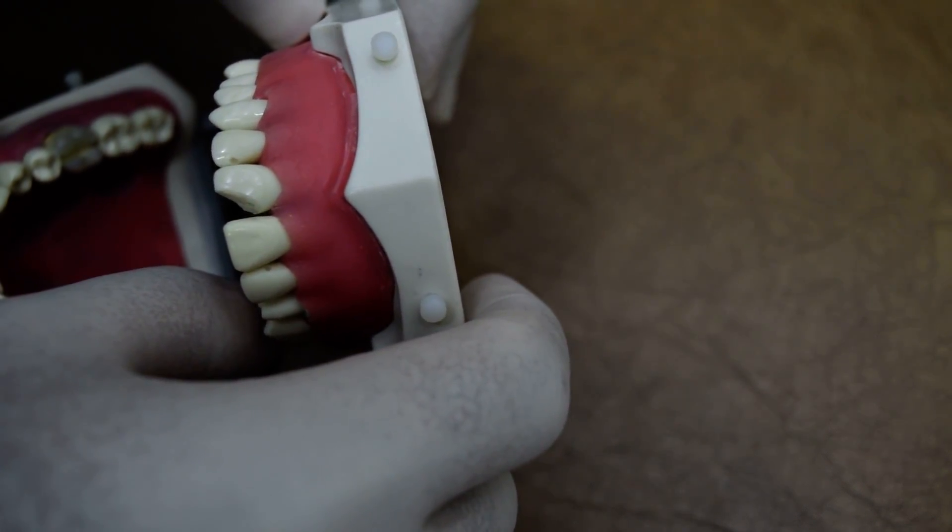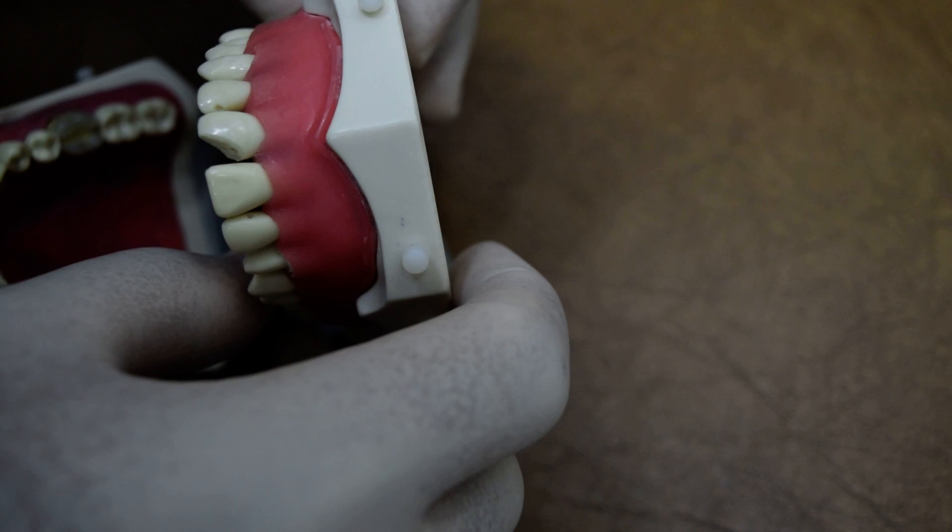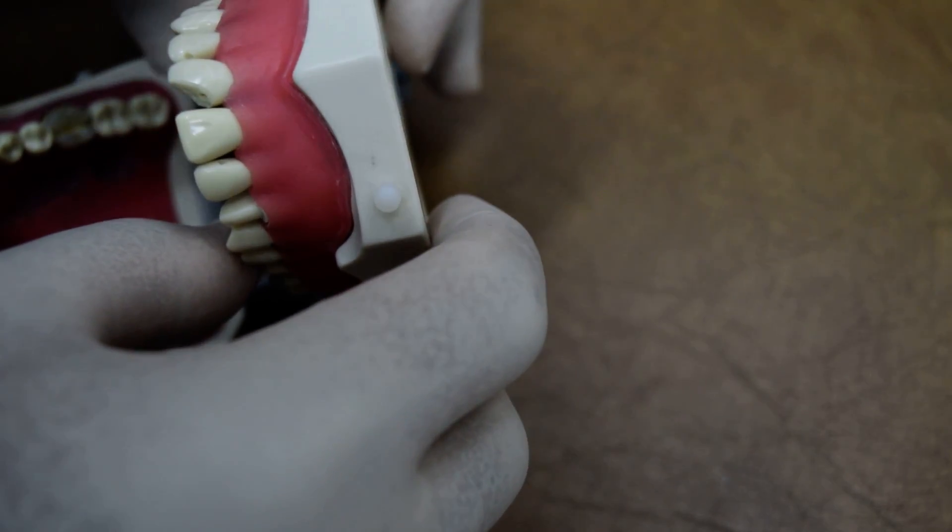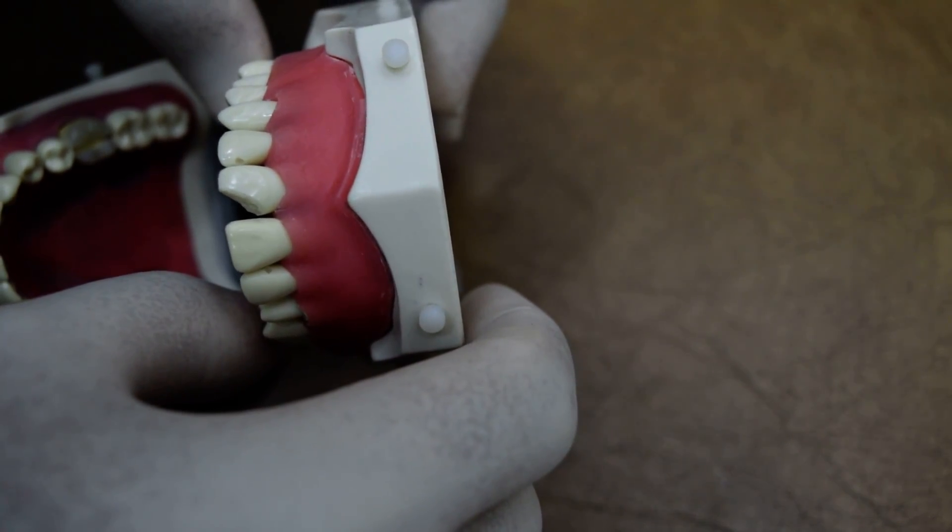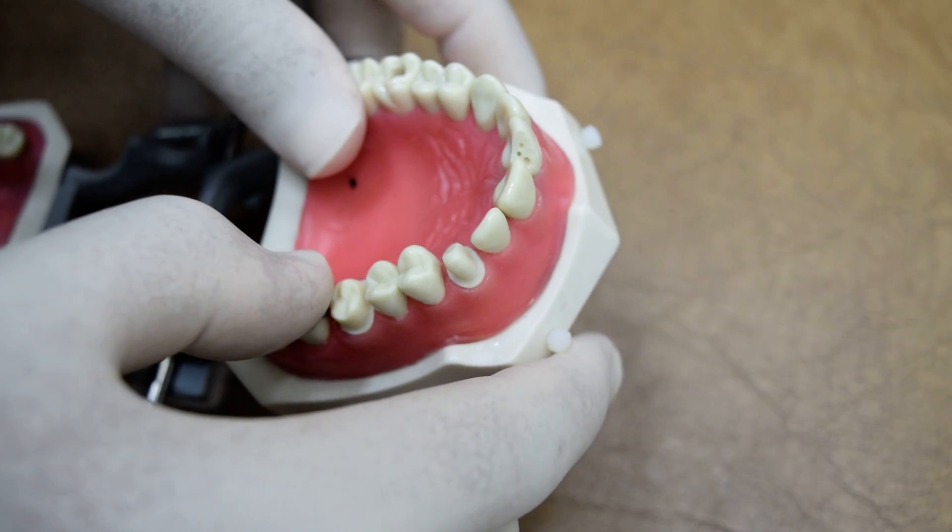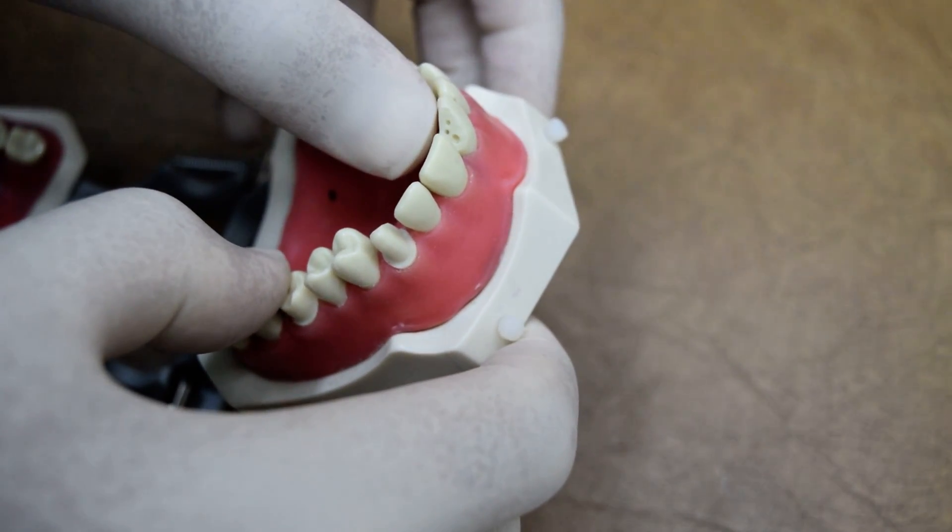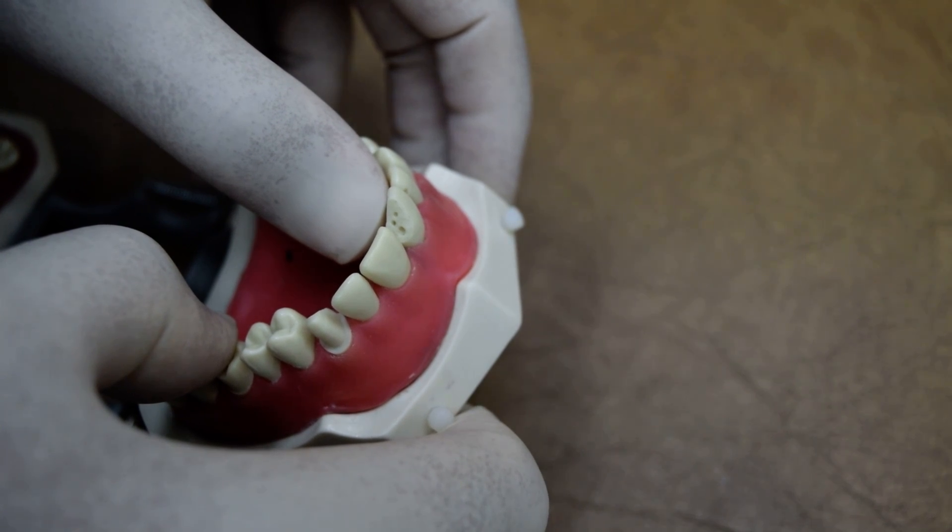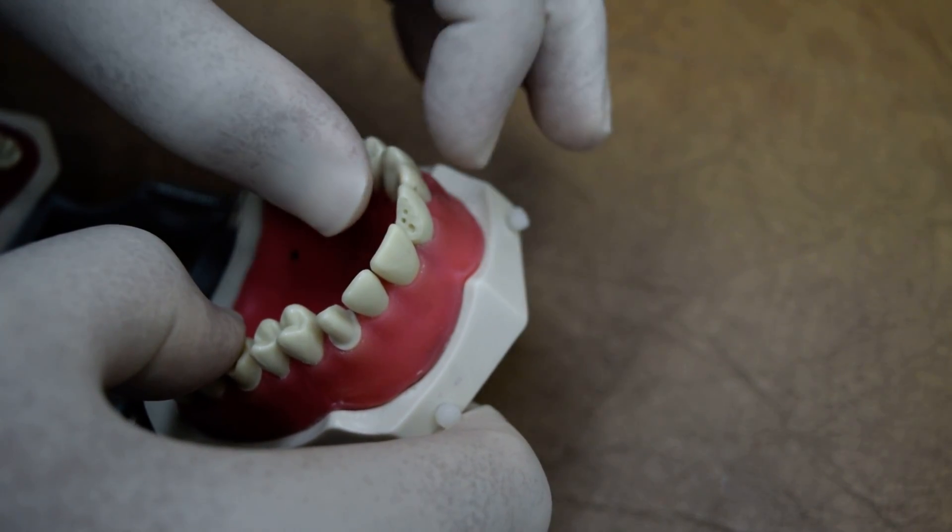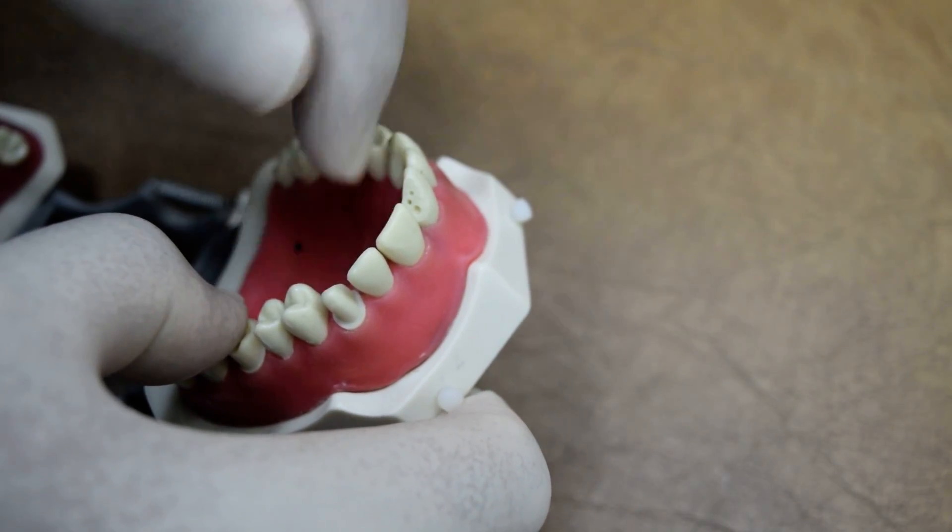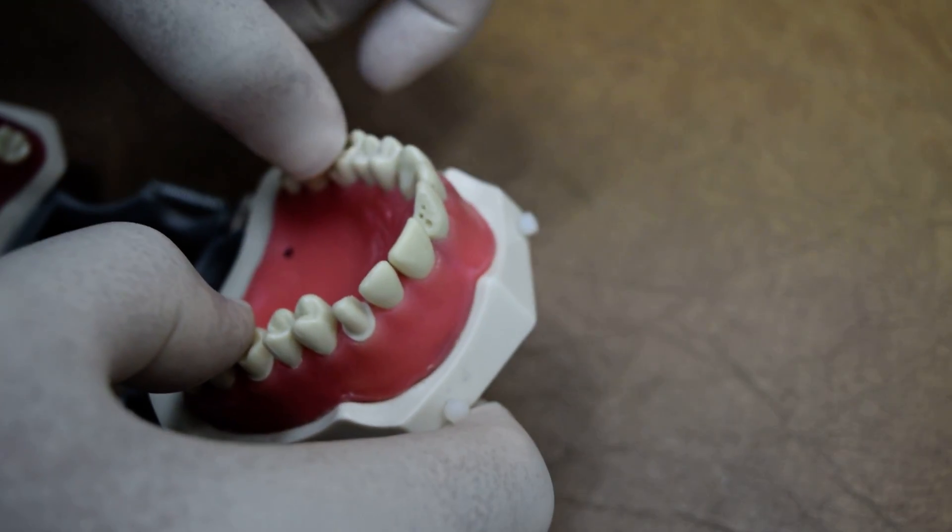For composite restoration class 4, first of all the cavity in the exam is very smooth, so we need to do retentive means. As you can see here, there are three grooves I did on the axial wall.